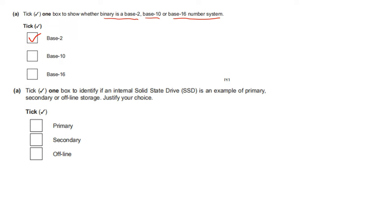Tick one box to identify whether an internal solid state drive (SSD) is an example of primary, secondary, or offline storage, and justify your answer. An internal SSD is not offline — it is secondary storage.